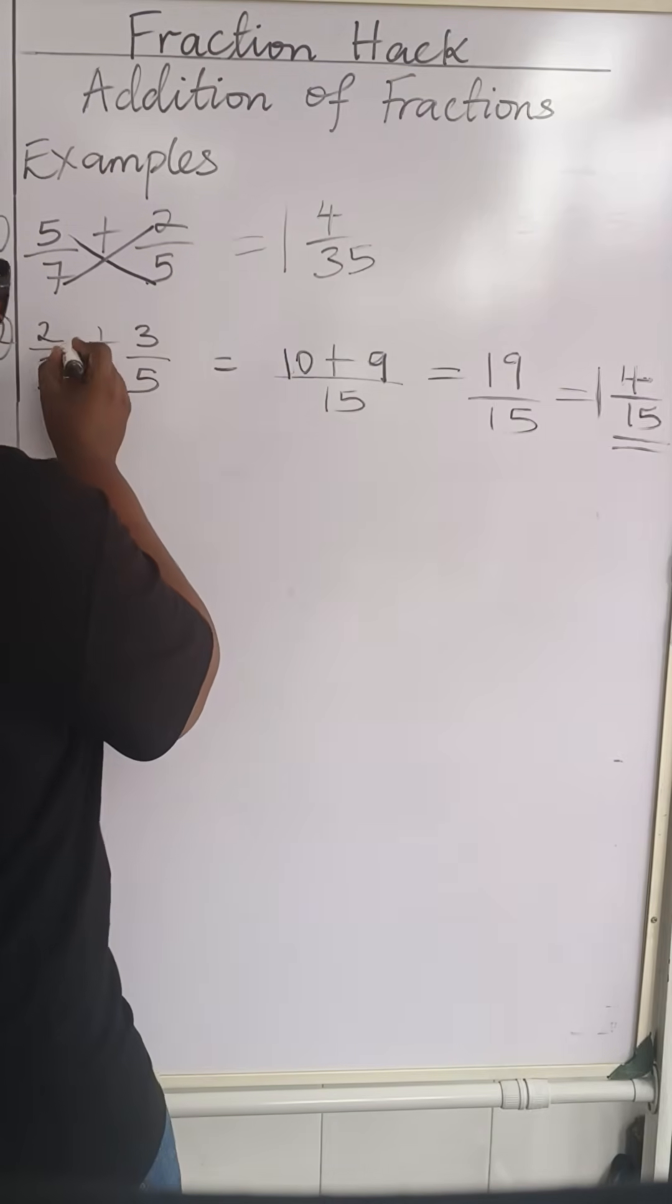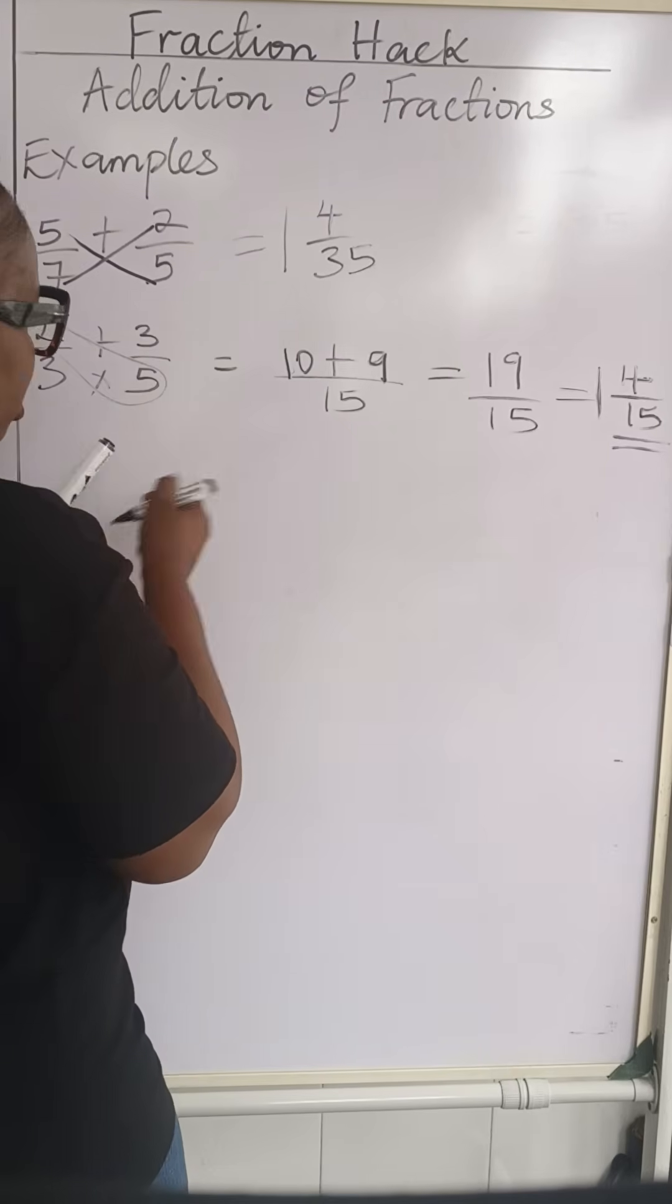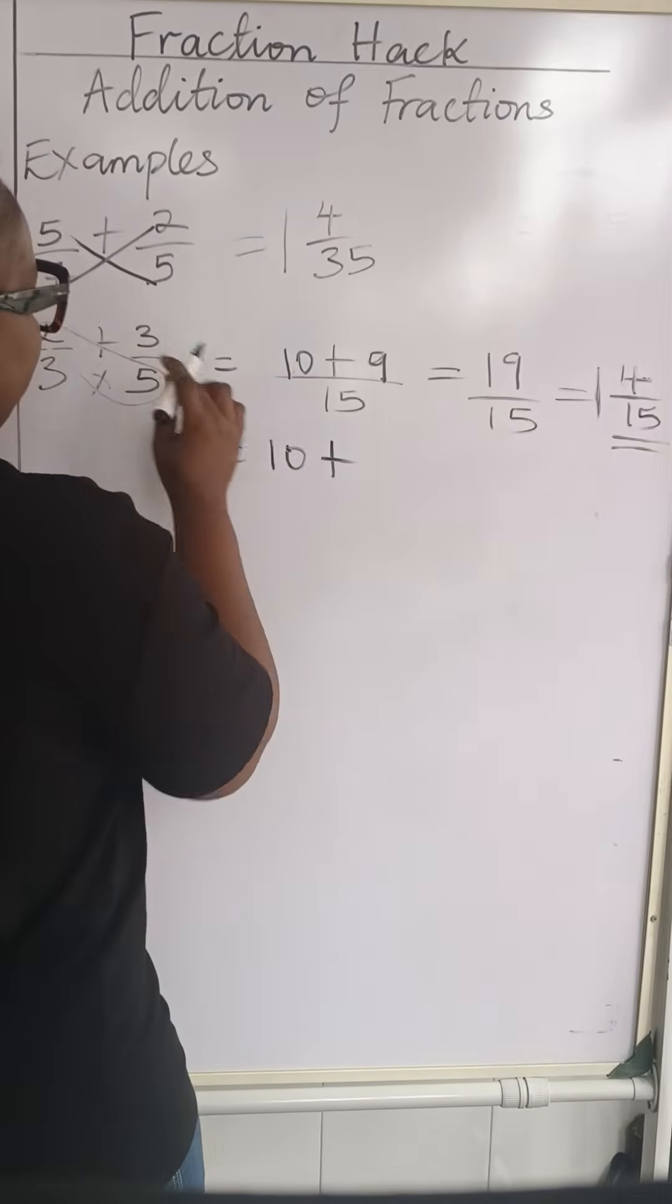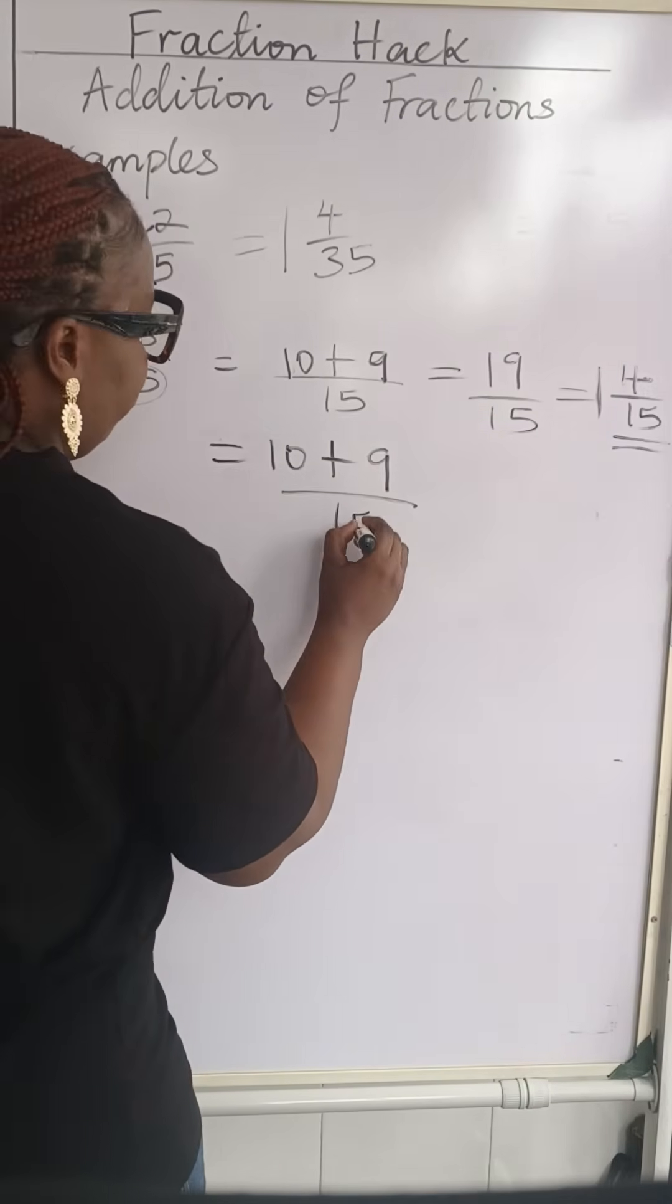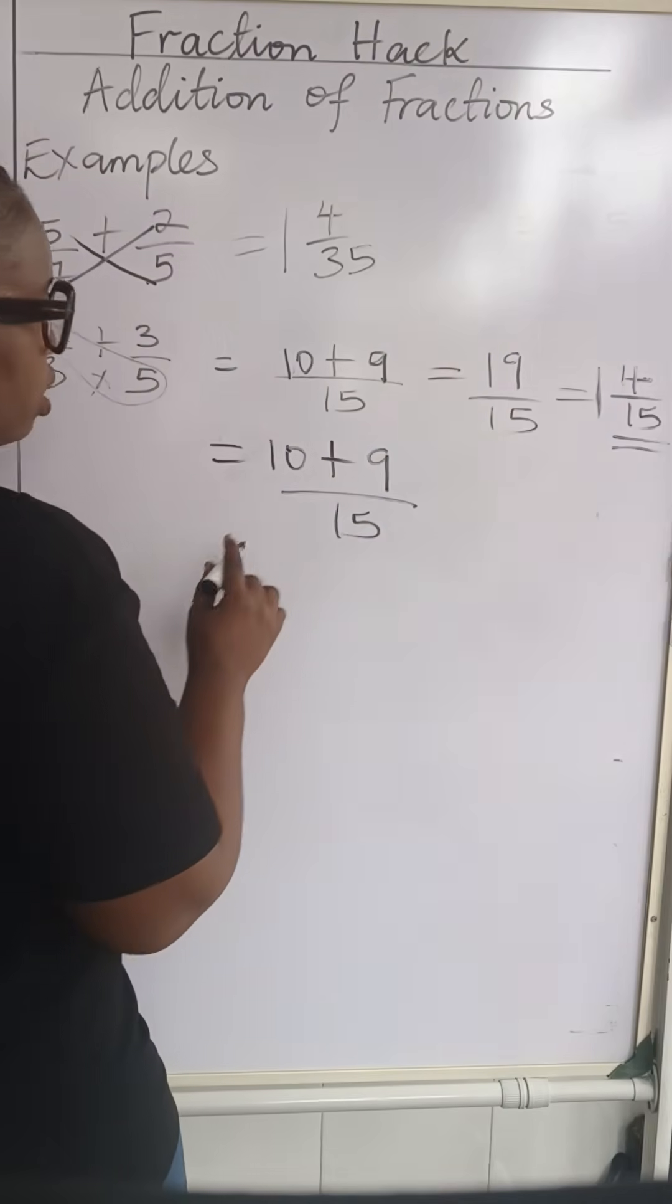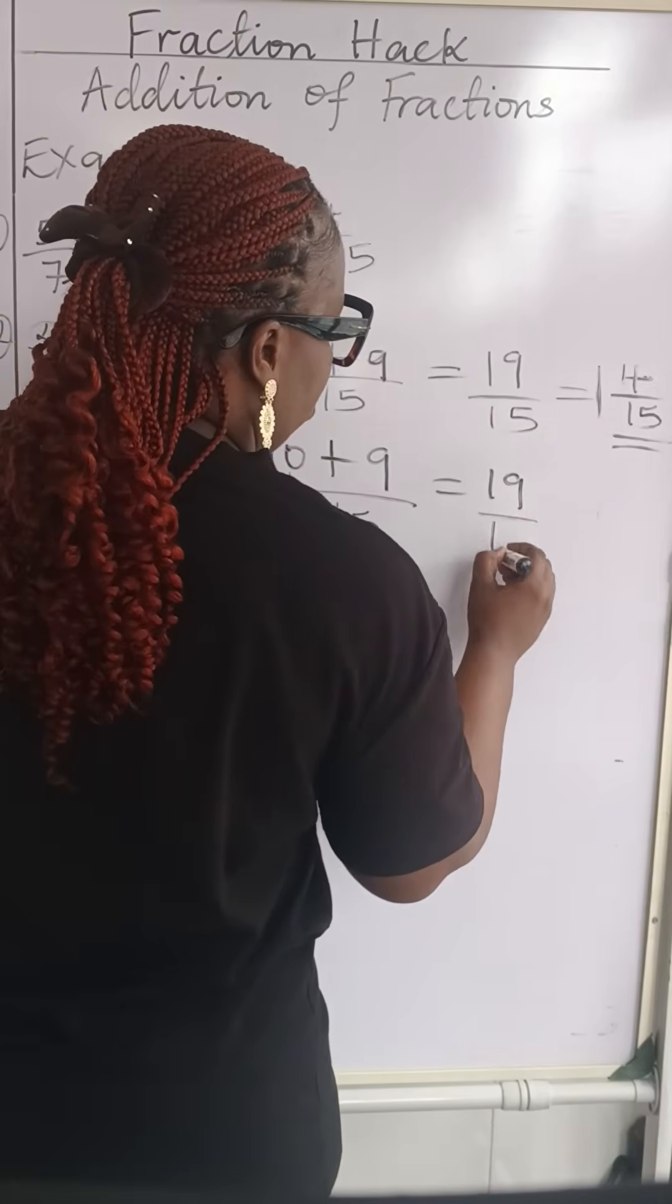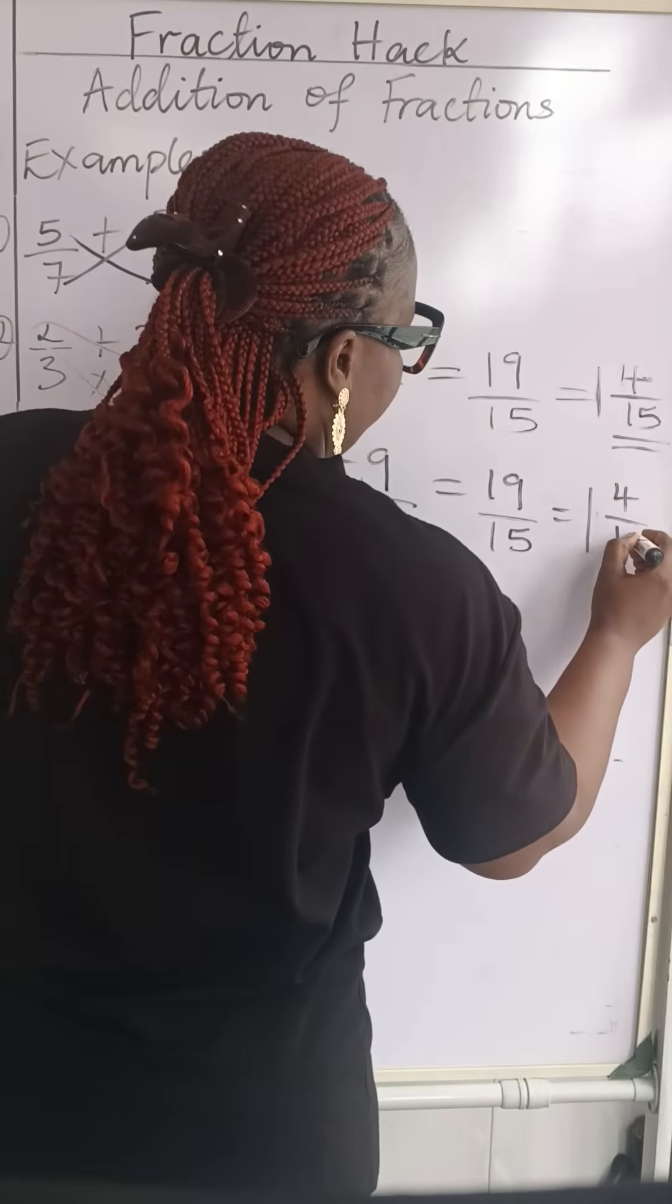Now we're still doing our butterfly. You do this one. So we're going to have 2 times 5 is 10, plus 3 times 3 is 9, all over 3 times 5 is 15. You see? It has brought us back to this place again. So you add, we're going to have 19 over 15, which will give us 1 whole number 4 over 15.